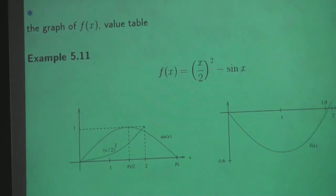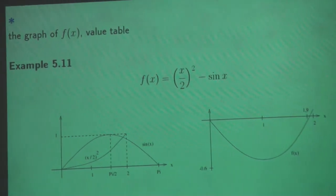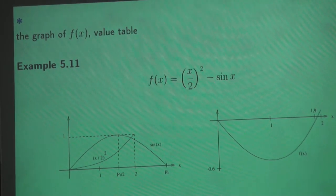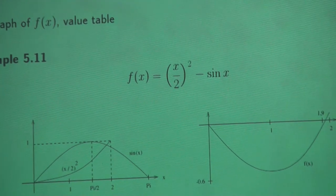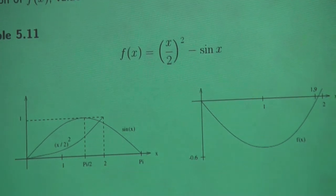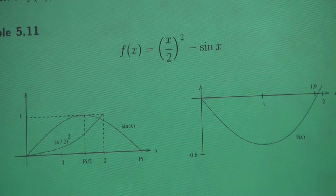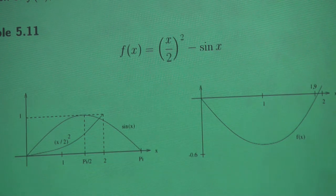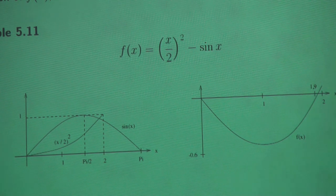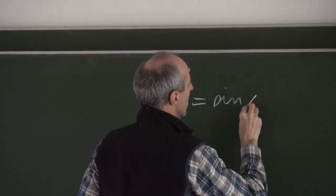Let's start with this example. Given is this function, and we are looking for roots of this function. The root is a point x for which f of x is equal to zero. If you look at this function and set it equal to zero, you get the equation x squared over four equals the sine of x.